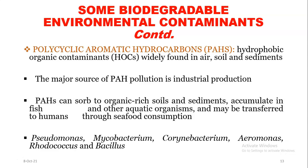We also have polycyclic aromatic hydrocarbons (PAHs). These are hydrophobic organic contaminants widely found in air, soil, and sediments. The major source of PAH pollution is industrial production. PAHs can sorb to organic-rich soils and sediments, accumulate in fish and other aquatic organisms, and may be transferred to humans through seafood consumption. Examples of microorganisms that can degrade PAHs are Pseudomonas, Mycobacterium, Sphingobacterium, Aeromonas, Rhodococcus, and Bacillus.